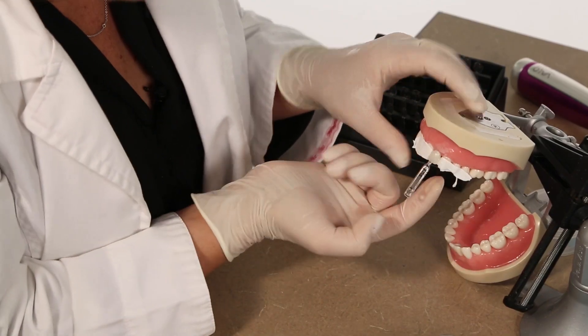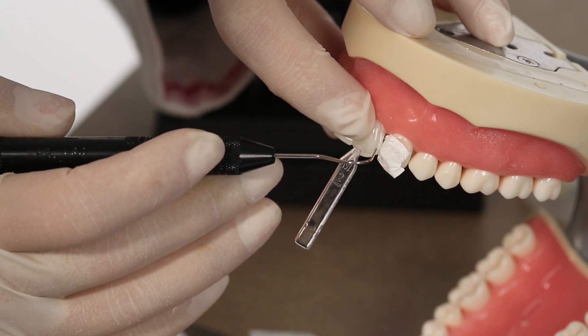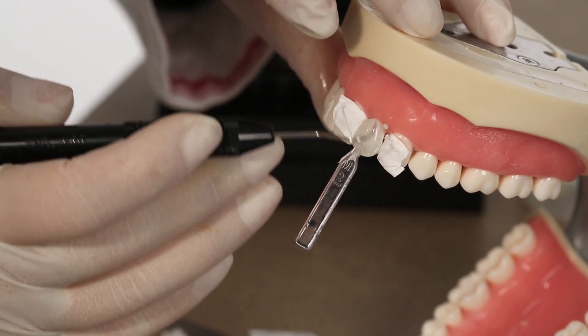Use your fingers to press the composite from the palatal side. Remove excess composite from the periphery with a probe.